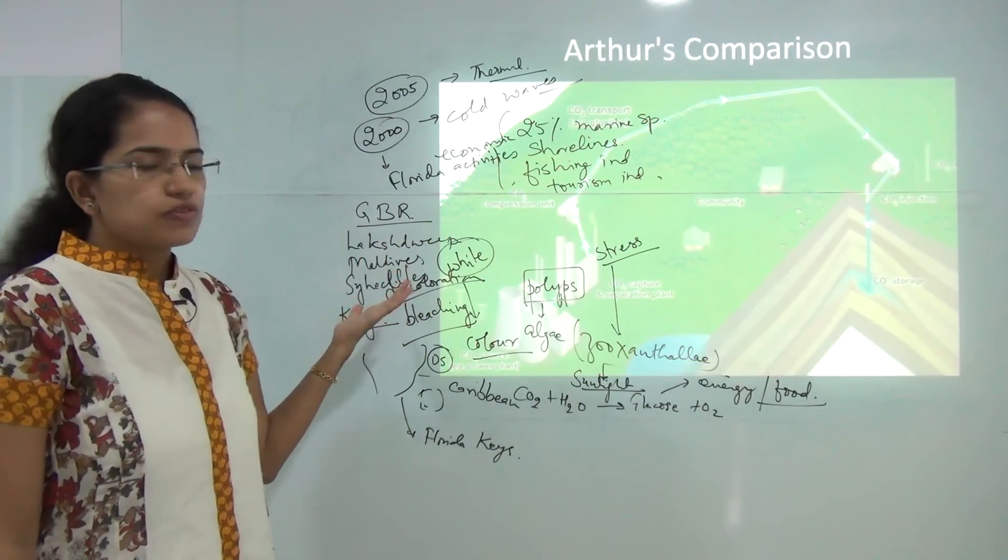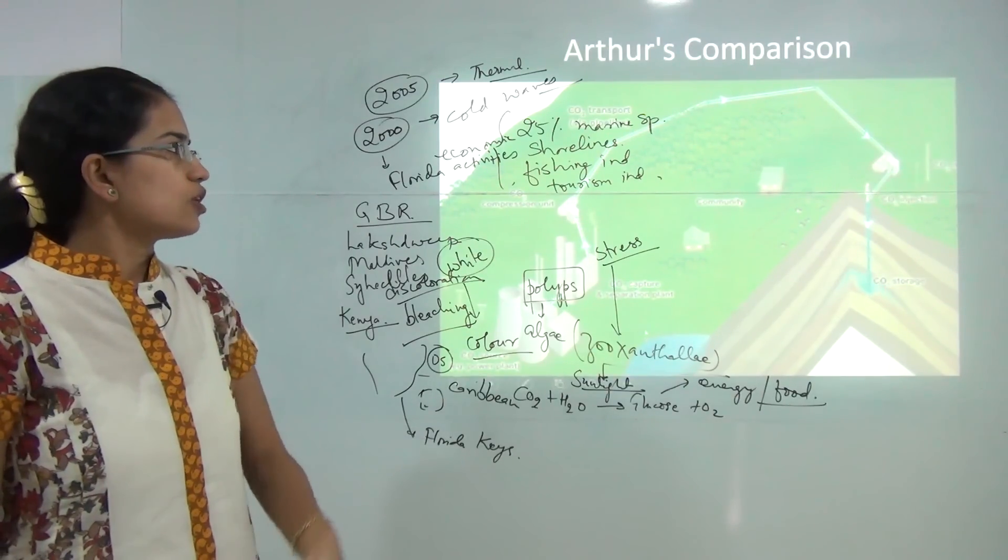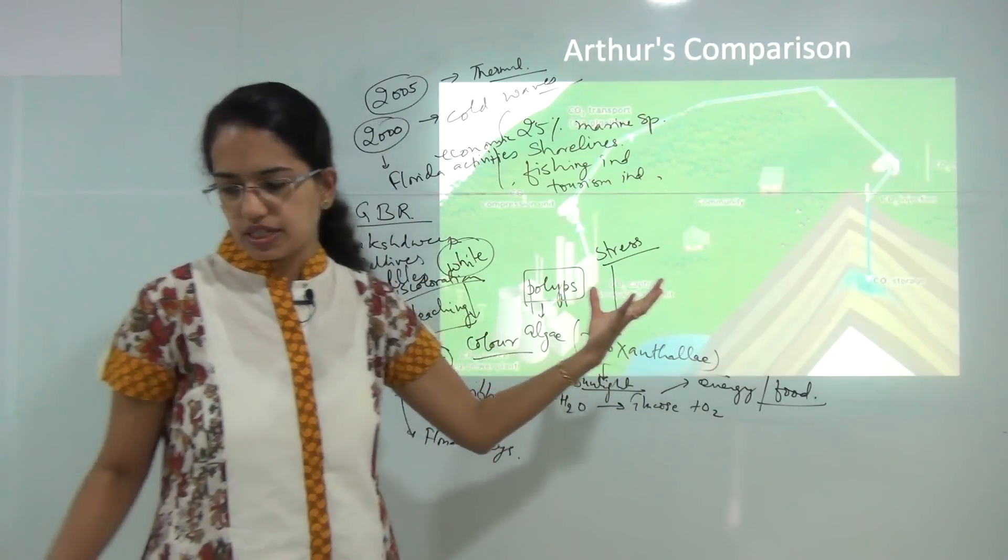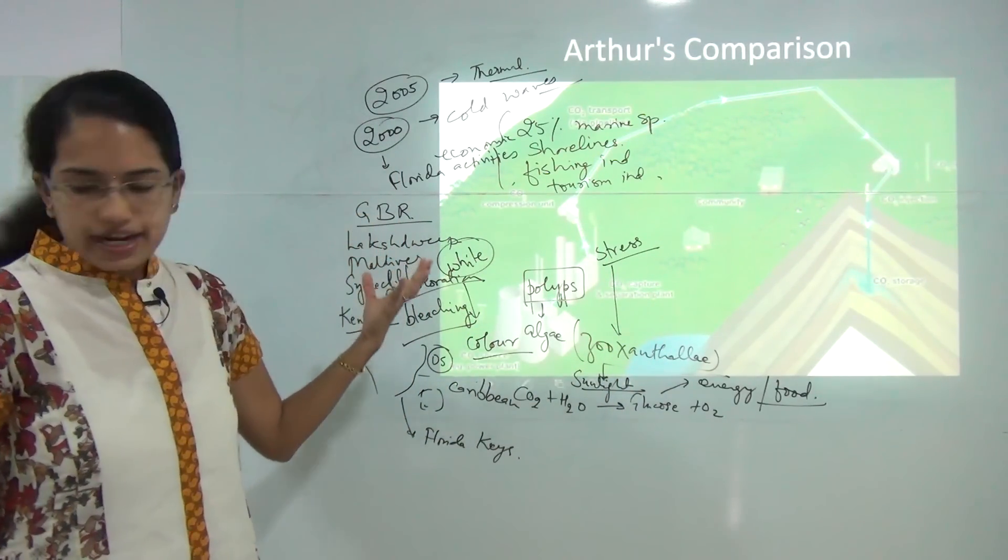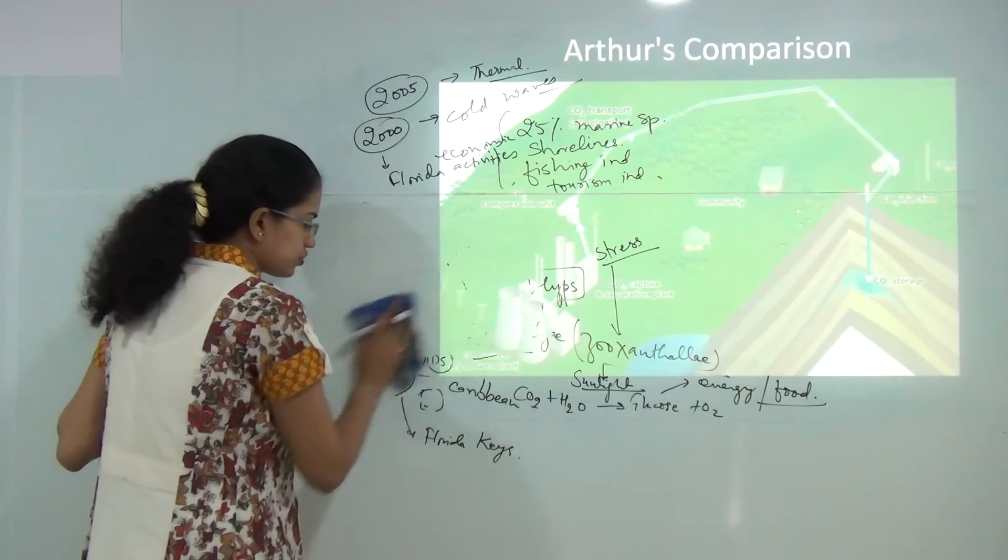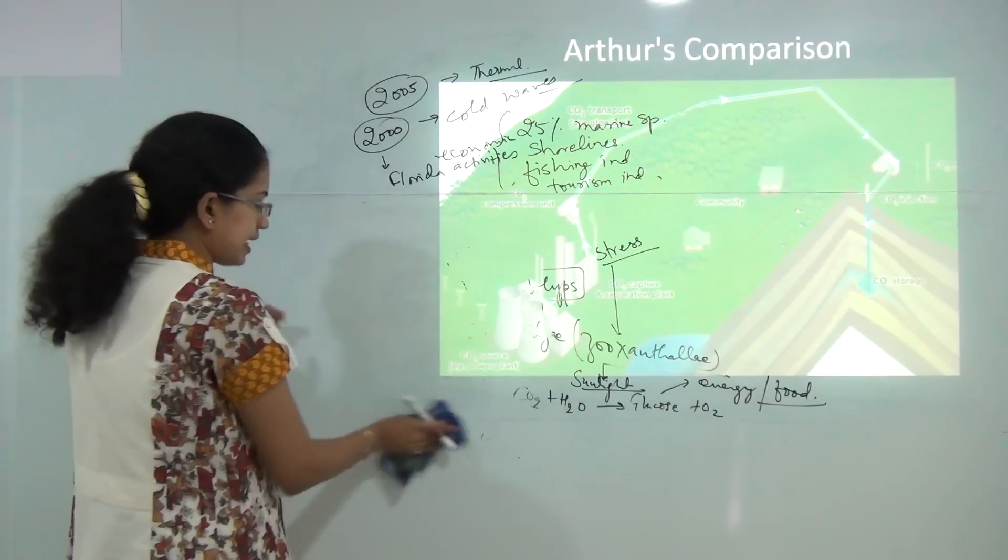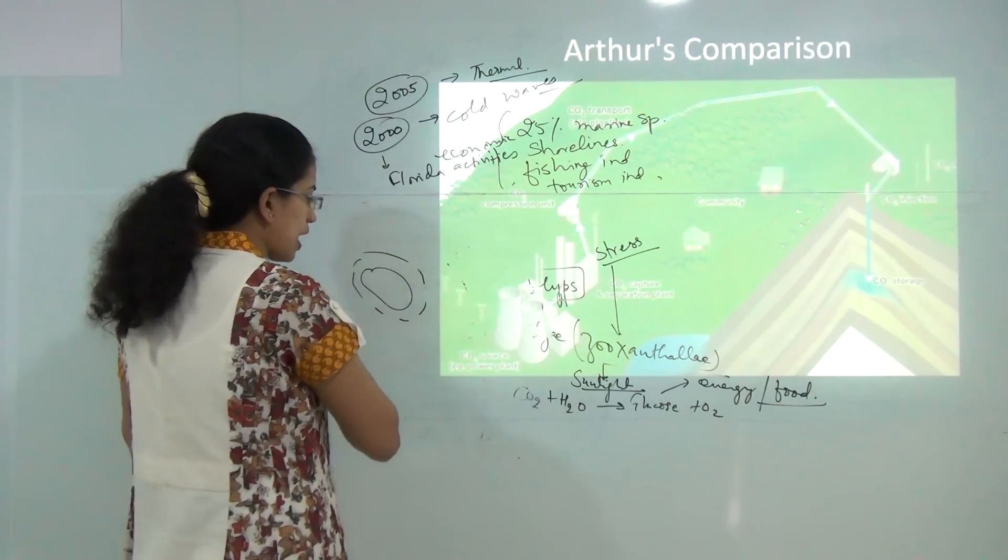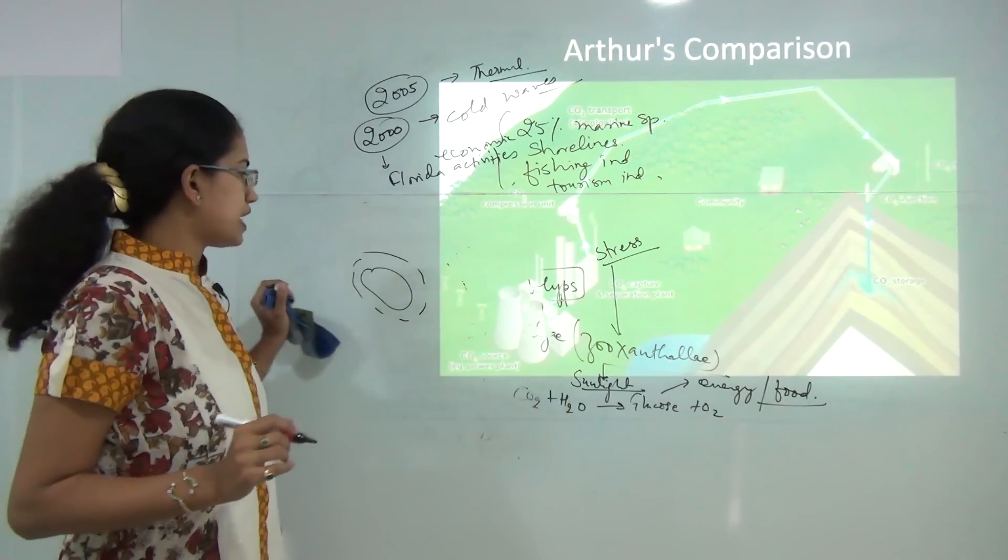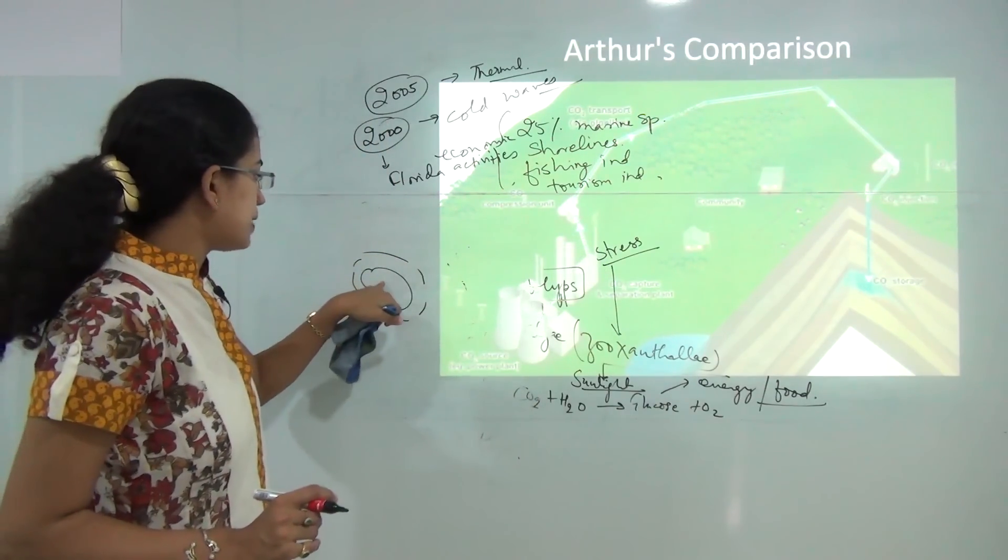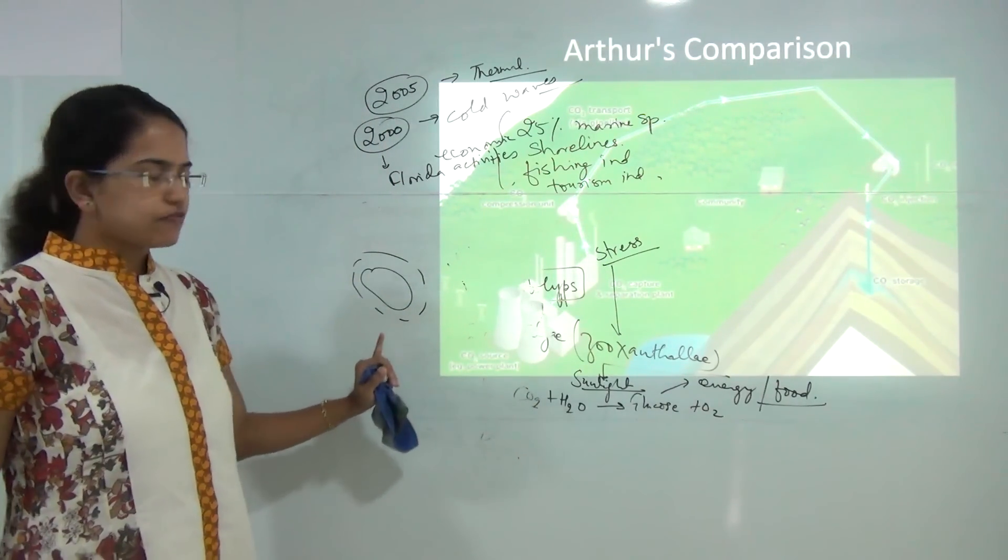Arthur was one of the famous scientist who compared the presence of a coral reef to a cement industry and he said that let's take an example of Lakshadweep. Lakshadweep is a volcanic island with atoll formation. You have atoll formations around which you have the coral reefs that are present and he said that the inhabitants are protected by the coral reef region.